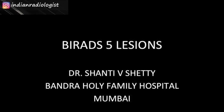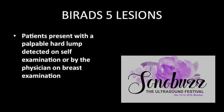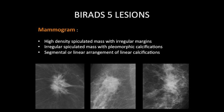BIRADS-5 category includes breast masses which are highly suspicious of malignancy. These lesions have more than 95% chance of turning out to be malignant. These patients usually present with a palpable hard lump which is picked up generally on self-examination or by the physician on a routine breast examination. So what is the characteristic appearance of these lesions on a mammogram and on ultrasound?